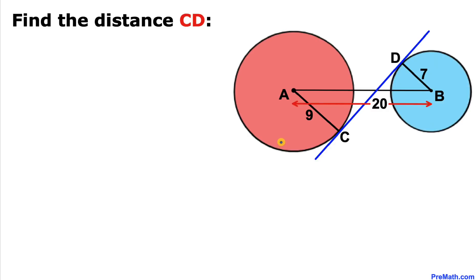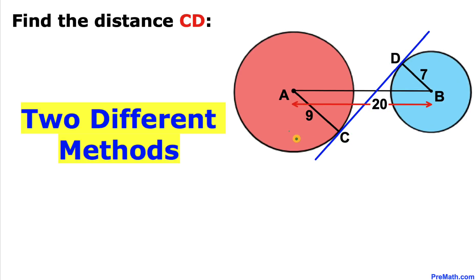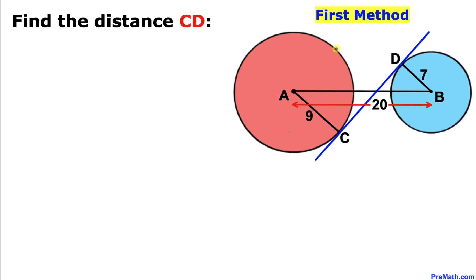Welcome to pre-math. In this video tutorial we have these two circles whose radii are 7 and 9 respectively, and the distance between their centers is 20. We are going to find the distance between the two points of tangency C and D. I will show you two different approaches to solve this problem.